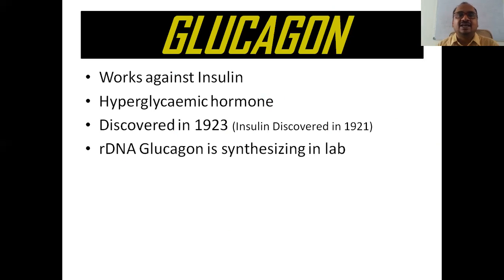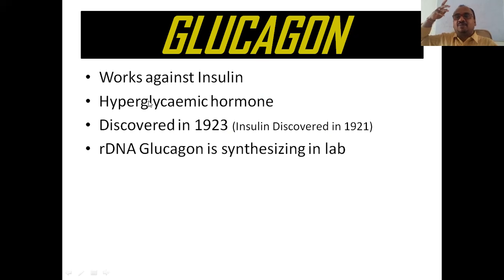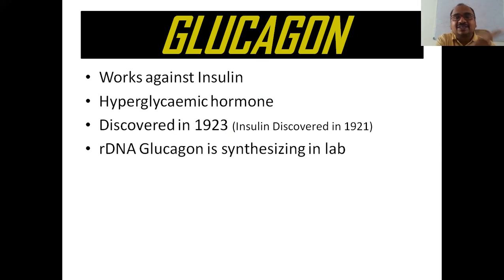Glucagon works against insulin. Insulin is very beneficial for diabetic patients, whereas glucagon is very dangerous for diabetic patients. It is a hyperglycemic hormone — used to increase the blood sugar level. This hormone was discovered in 1923; insulin was discovered in 1921 — so glucagon was discovered two years after insulin.